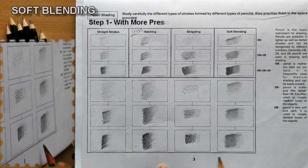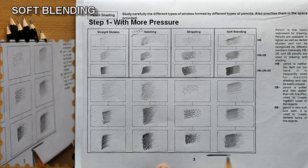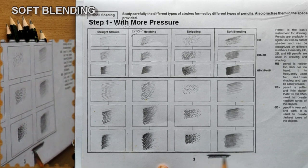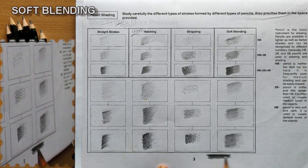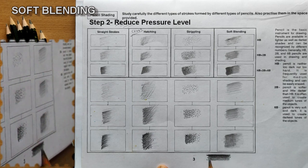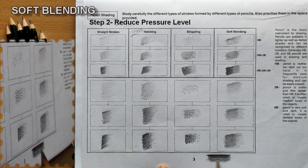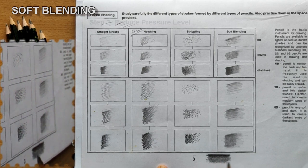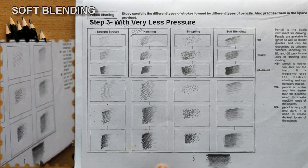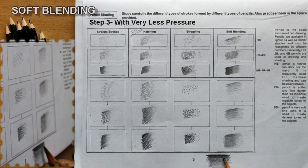Soft blending can also be done by holding your pencil as low as possible to the surface of the sheet and applying more dark shade initially at the beginning. Then reduce the pressure and slowly move downward — the downward movement should be very minute. Relieve the pressure gradually and you will form a light shade. This is another kind of soft blending which we generally follow.